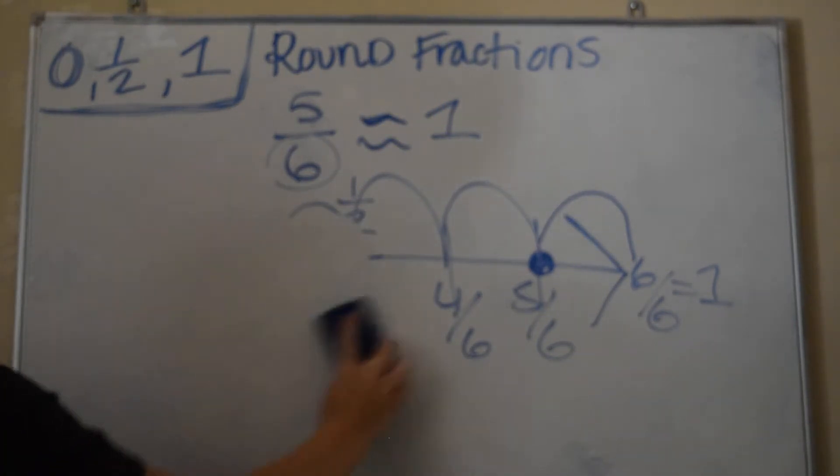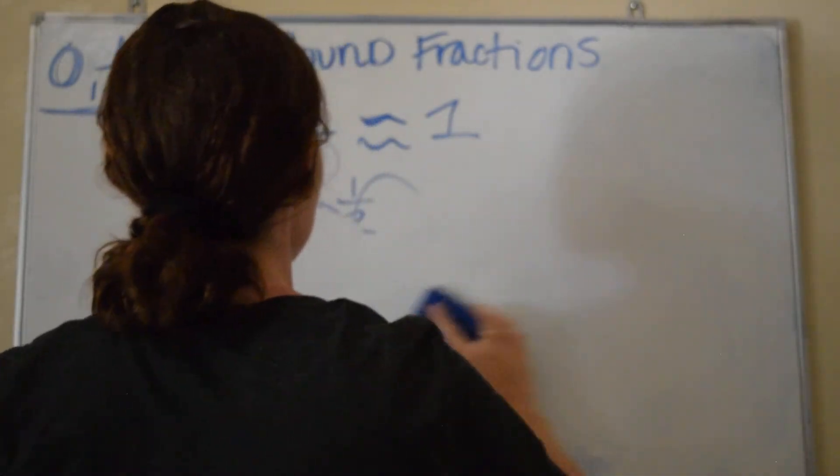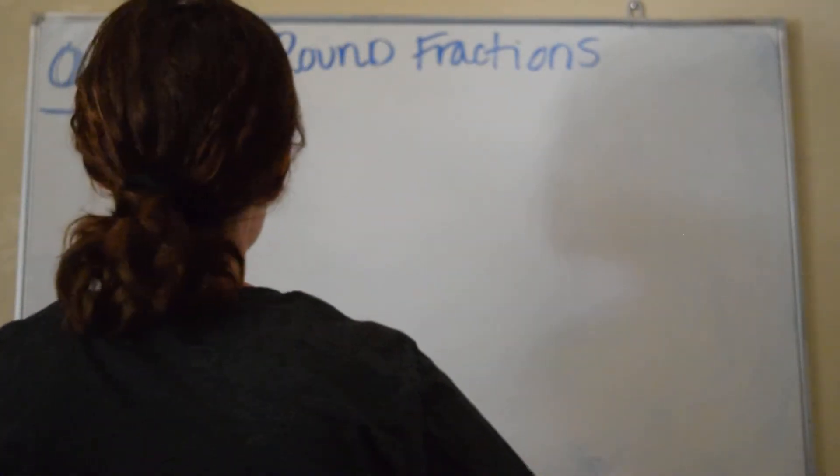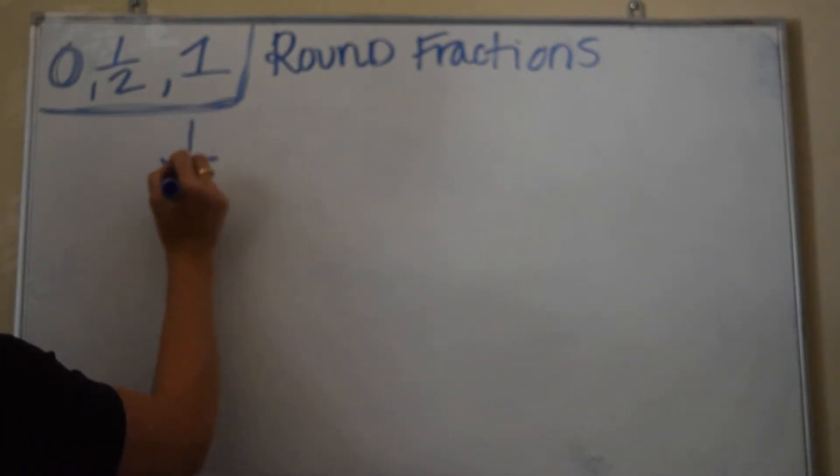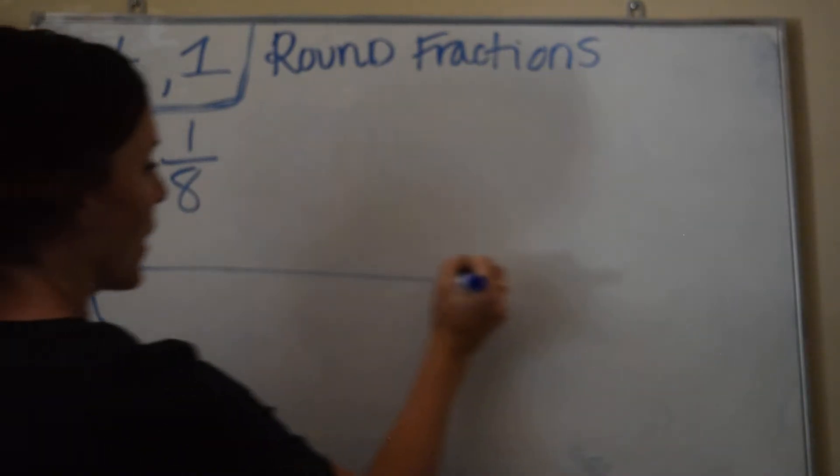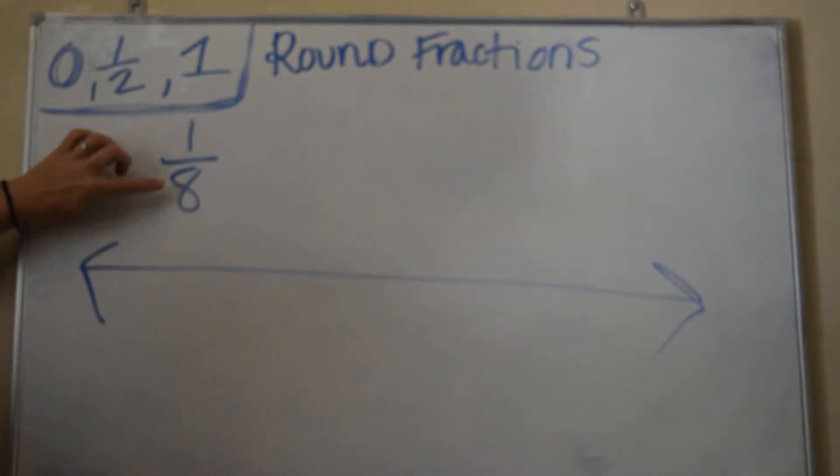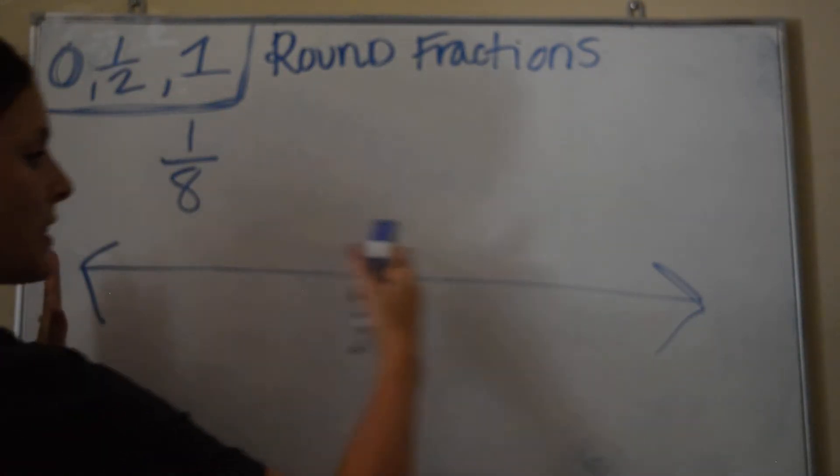Alright, let's do another one. So each time, you're going to label a number line and then decide: is it closer to 0, a half, or a whole? That happened to be rounded to a whole. Let's do one where it's a different scenario. Let's say I have 1/8. So draw your number line. Remember, I have 8 pieces, which means I need to draw 7 lines.